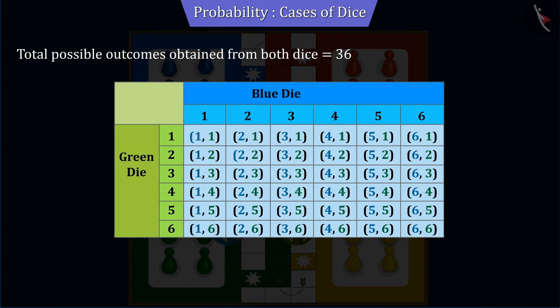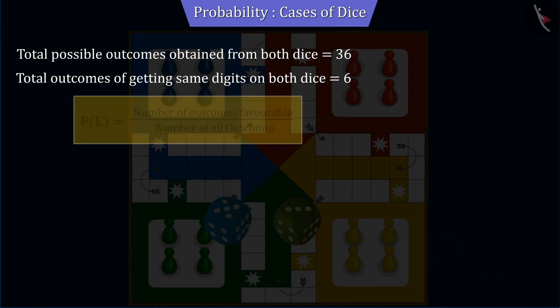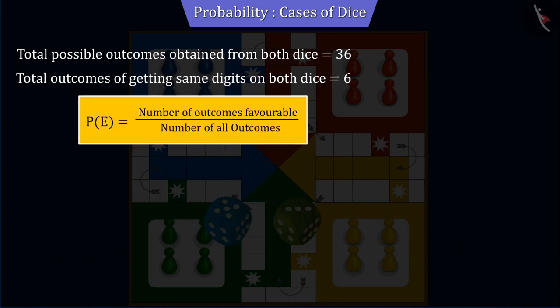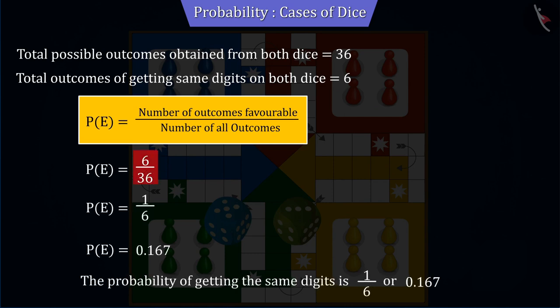Here we have to find the probability of getting the same number. We can see that there are six different outcomes having the same digit on both dice. That is, the total number of favorable outcomes will be 6. Now let's find the probability of getting the same number using the probability formula, which is 6 by 36 or 0.167.